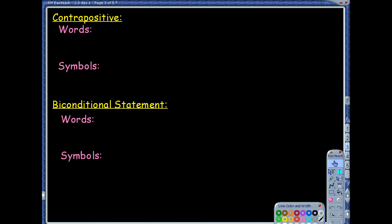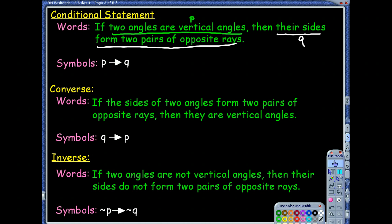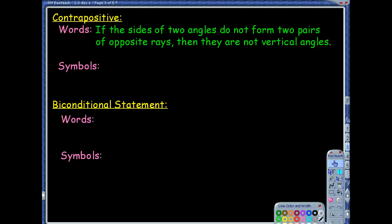Now, what about the contrapositive? Contrapositive, you negated the converse. Let's pull back the converse for a second. The converse says if the sides of two angles form two pairs. So if the sides of two angles do not form two pairs of opposite rays, then they are not vertical angles. Now, for symbols, this negates the converse. So the converse was our q implies p. So we're going to throw in the little not symbol that's squiggly in front of the q and the p. So we're going to write this as negating q implies negating p.